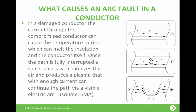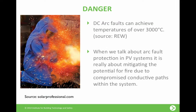The mechanism for an arc fault within a conductor: in an undamaged conductor current flows freely, but as you can see from this image, once damage occurs to the conductor it limits the conductive path, which can cause heat to rise. If the heat rises enough it can melt the insulation and the conductor. Once the conductive path is fully interrupted, a spark can occur when ionization happens in the air, producing a plasma — made visible through an electric arc. DC arc faults can achieve temperatures of over 3,000 degrees Celsius, so arc fault protection in PV systems is really about mitigating the potential for fire due to compromised conductive paths.